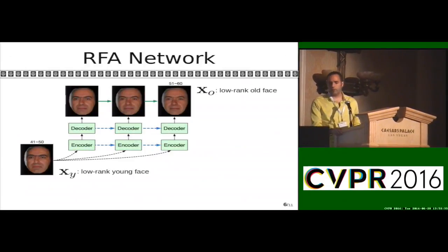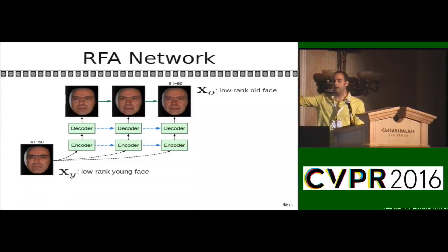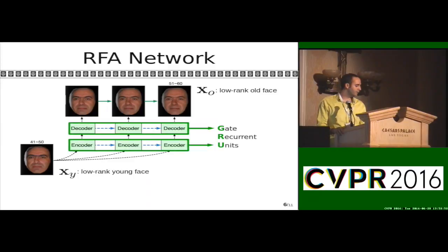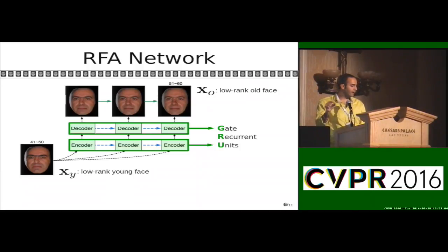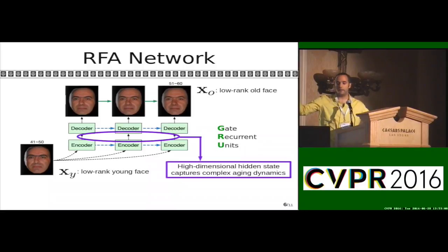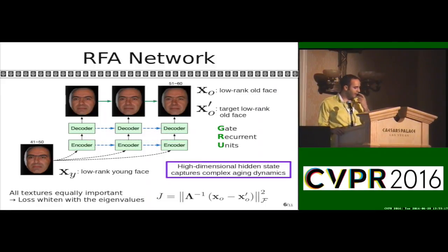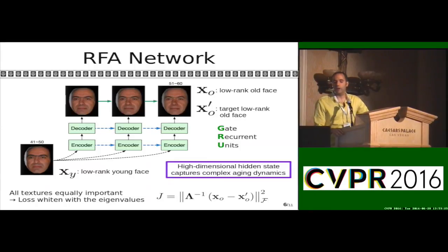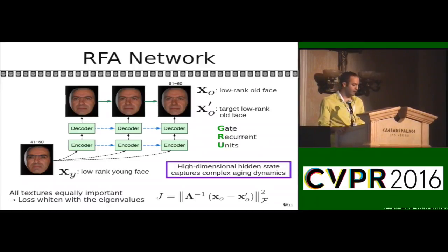In more detail, we have the input low-rank young face going into the encoder, then the decoder, outputting the low-rank old face. This models the common aging process. Both the encoder and the decoder are gated recurrent units — this is the first time this structure is proposed — and it allows a high-dimensional hidden state capable of capturing complex dynamics inherent to aging. We also proposed a modified loss where eigencoordinates are weighted by eigenvalues so that all of them have equal weight in the final loss.